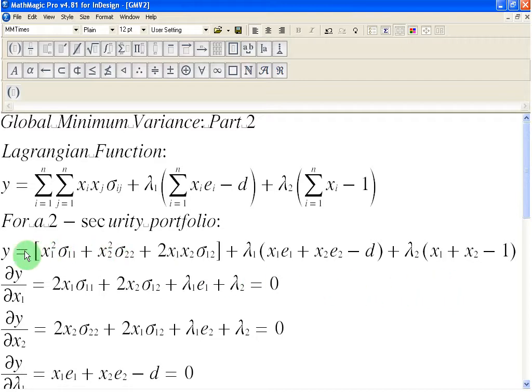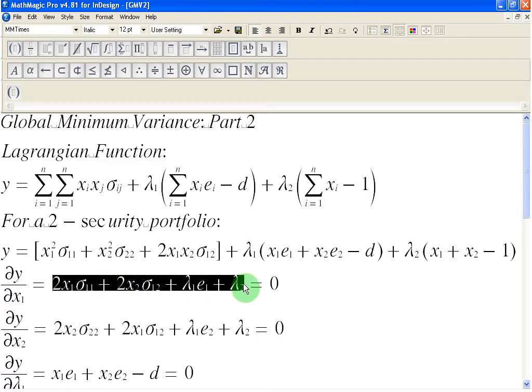After that, what we are doing is we are taking partial derivatives of the Y function with respect to X1 first, then with respect to X2, then with respect to Lambda 1, and then with respect to Lambda 2. So, when we take a partial derivative of the Y function with respect to X1, this is what we are going to get.